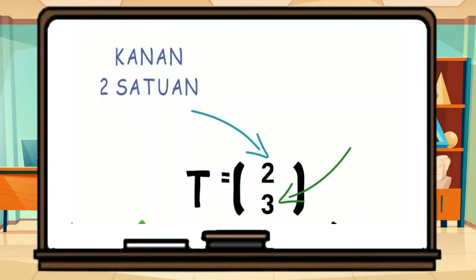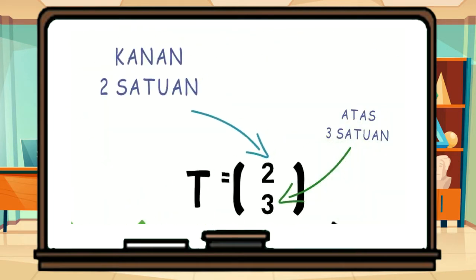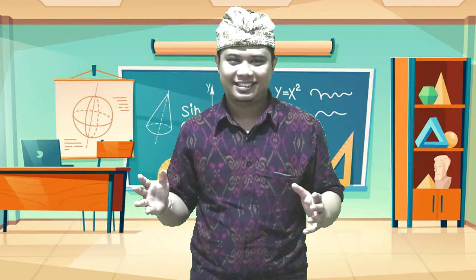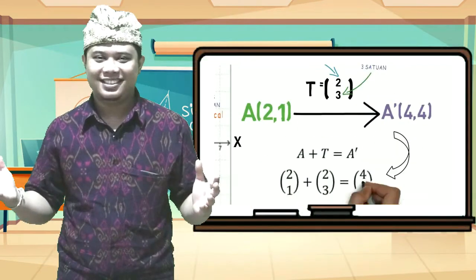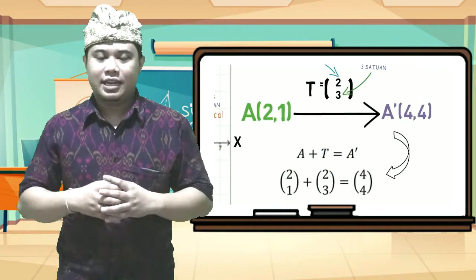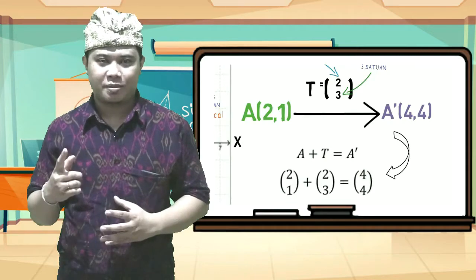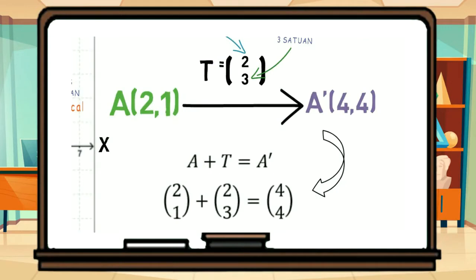Sedangkan 3 menunjukkan pergeserannya ke arah vertikal. Karena bergeser ke atas 3 satuan, maka menjadi positif 3. Bentuk ini bisa kita nyatakan dalam bentuk operasi matriks. Jadi, titik A (2,1) ditambah oleh matriks transformasinya yaitu (2,3), akan diperoleh hasil bayangannya yaitu (4,4), yang tiada lain adalah titik A aksen.